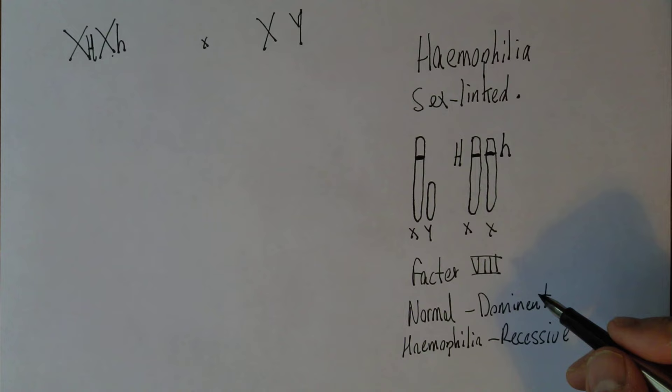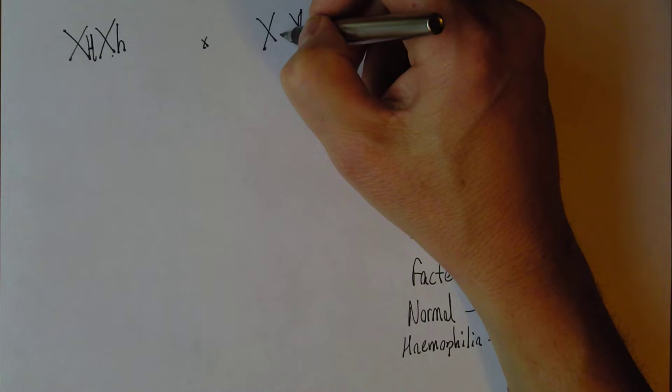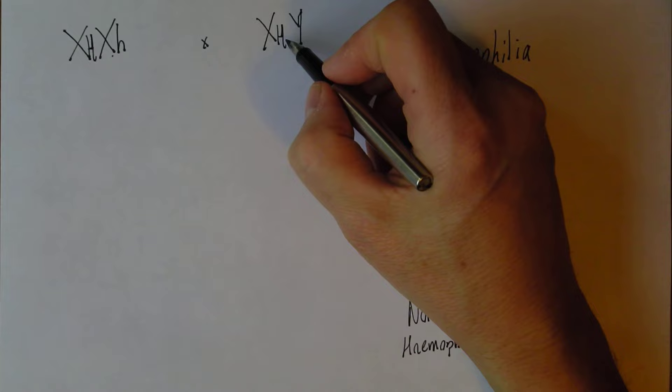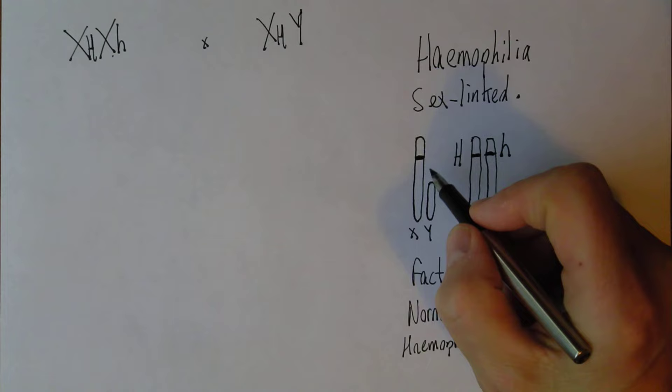And let's suppose she marries a normal man. Now he'll have an X big H because it's normal. This is what I've got—I've only got one gene for producing Factor VIII, but thankfully I don't have haemophilia because one gene is more than enough.